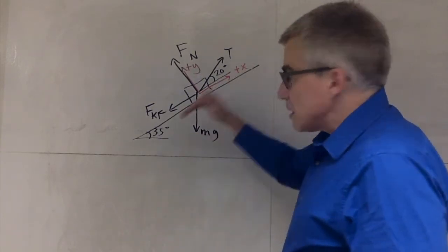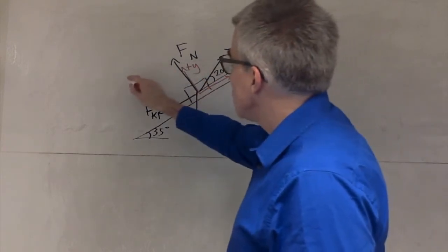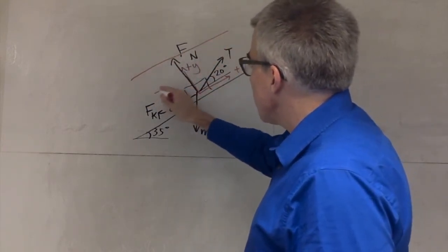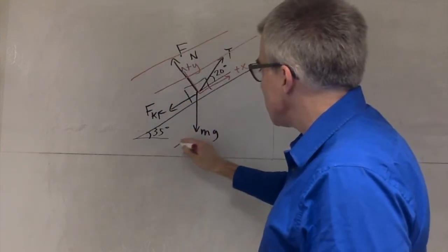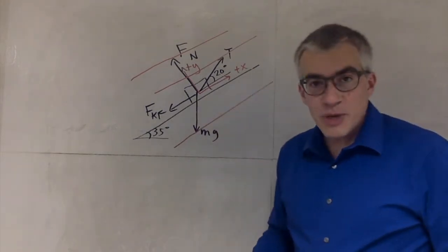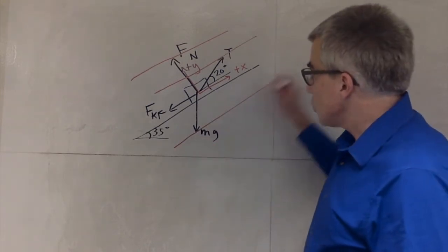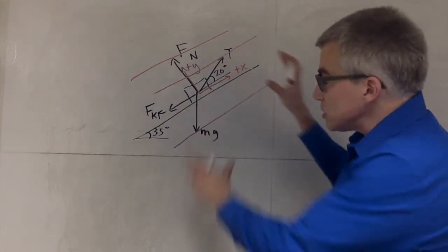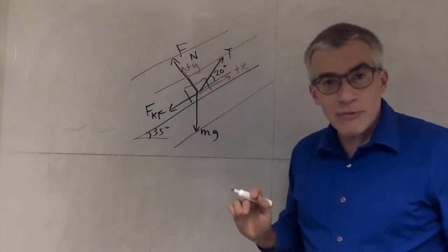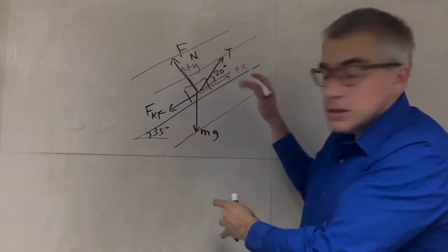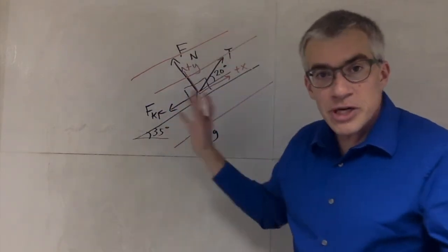And the x-axis, that direction, you can draw lines pointing that way, parallel to that, wherever you want, especially on the tips of all the arrows. So you can draw lines parallel to the x-axis. Remember this plus x plus y represents an entire grid, like tons and tons of lines, but I don't want to crowd up the picture.